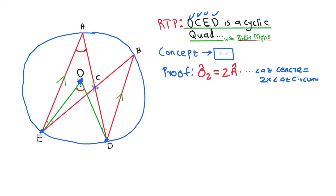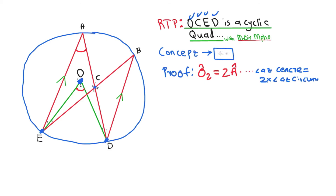The same arc that subtends O2 also subtends angle A, but it also subtends angle B. That means angle A equals angle B. So: angle A = angle B, with the reason being angles in the same segment.